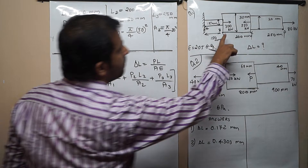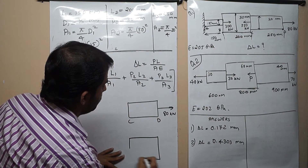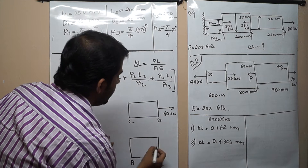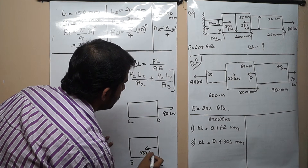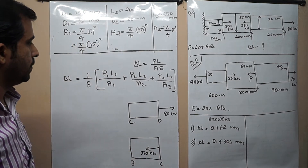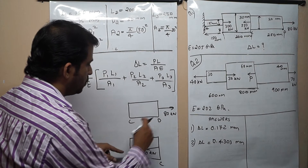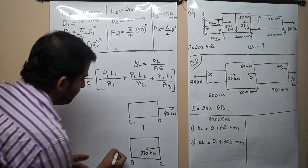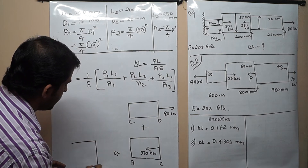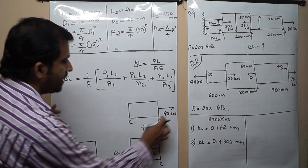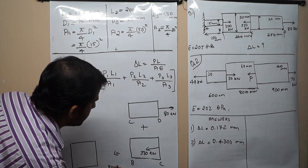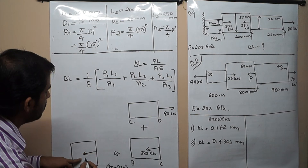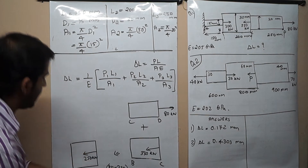Coming to section BC, a load of 330 kN is acting inwards. To get the net effect, we add CD and BC: 80 kN to the right and 330 kN to the left. The net effect is 80 minus 330 equals minus 250. The direction is to the left, so 250 kN is acting in compression on section BC.